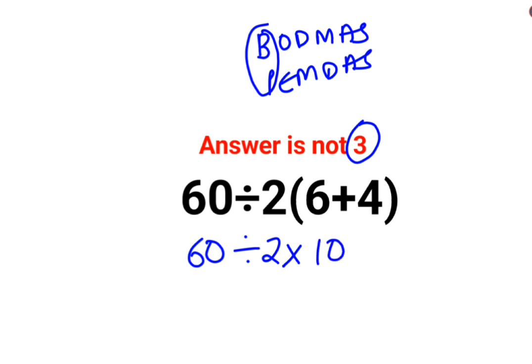Now remember that when you have division and multiplication, both of them hold equal precedence. So in sums like these, you will follow the rule of left to right. Whatever operation happens first from your left-hand side has to be done first.